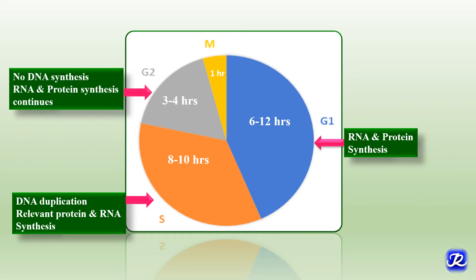G2 phase, or gap 2 phase, lasts for about 3 to 4 hours and continues until the beginning of mitosis. There is no DNA synthesis; only RNA and protein synthesis continues, and microtubules are also synthesized during this phase.